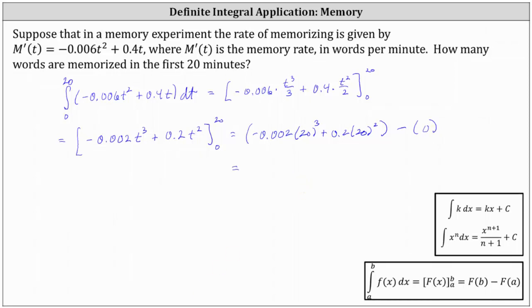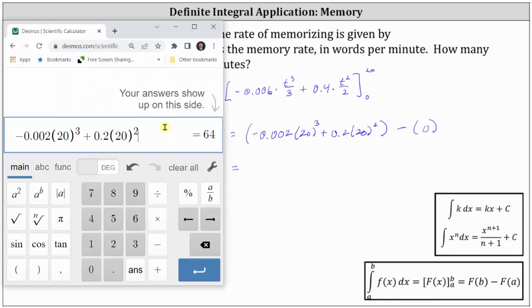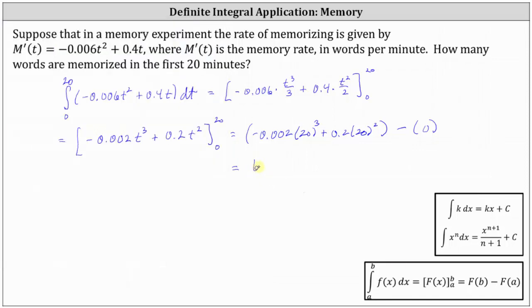Going to the calculator the result is 64. So now we know 64 words are memorized in the first 20 minutes.